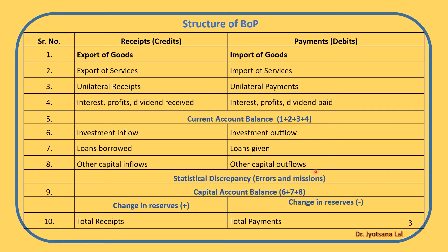Another important item in this structure is statistical discrepancy, also known as errors and omissions. This reflects transactions that have not been recorded for various reasons and so cannot be entered under standard headings, but must appear since the full Balance of Payments account must sum to zero.